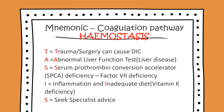Continuing HEMOSTASIS: A equals abnormal liver function tests due to liver disease; S equals serum prothrombin conversion accelerator (SPCA) deficiency — factor seven deficiency; I equals inflammation and inadequate diet, for example leading to vitamin K deficiency; and S — if there is a coagulation disorder, always seek specialist advice.